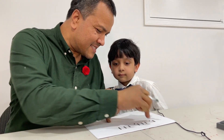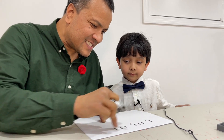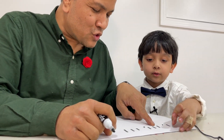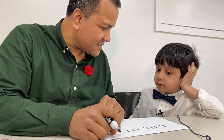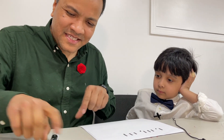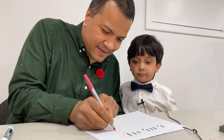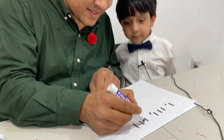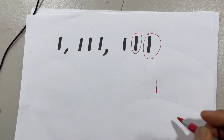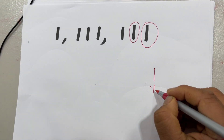So whose one is the biggest? What is the value of this one? One. What is the value of this one? Ten. That's good — ten. What is the value of this one? One hundred. Good. One hundred. What is the value of this one? One thousand.